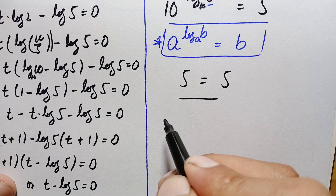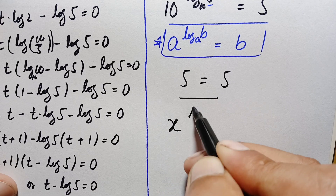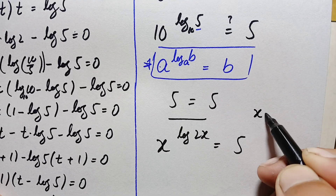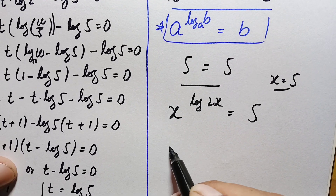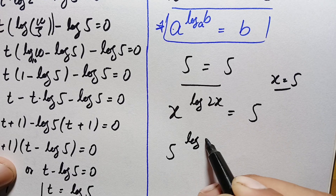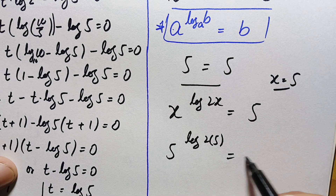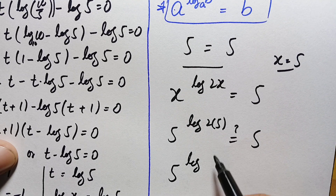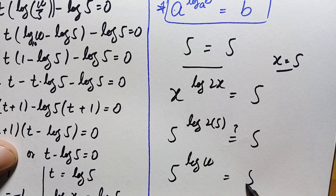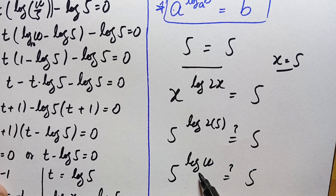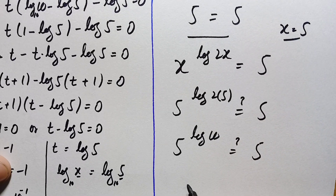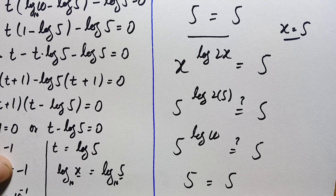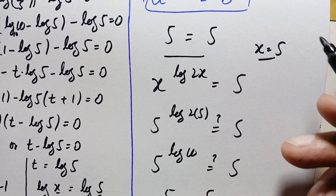Now verifying x = 5: substituting into x^(log 2x) = 5 gives 5 raised to power log(2 × 5), which is 5 raised to power log(10). Since log 10 with base 10 equals 1, this becomes 5 raised to power 1, which is 5. Both sides equal 5.